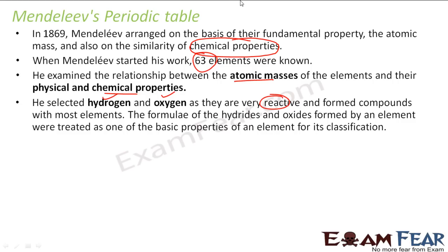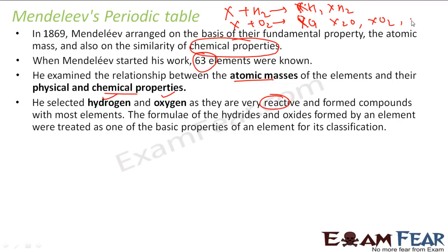He reacted most of the elements with hydrogen and oxygen. For example, some metal X reacted with hydrogen gives something, and X reacts with oxygen gives something. It may be XH, XH2, XO, X2O, XO2, X2O3 — based on the property of the element, it can react in different ways. Similarly with hydrogen, it can give XH3 or XH4.